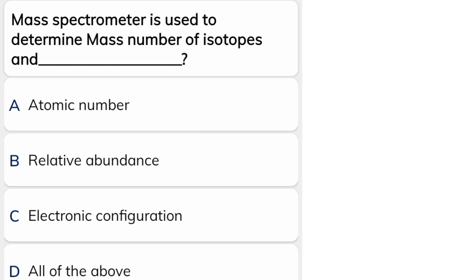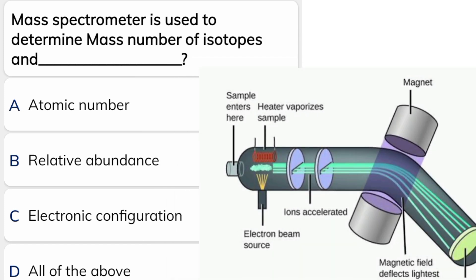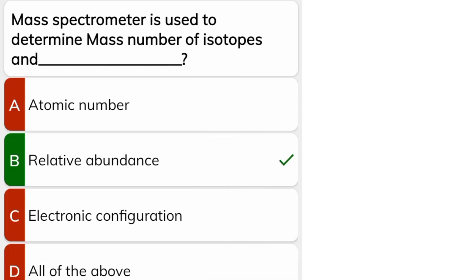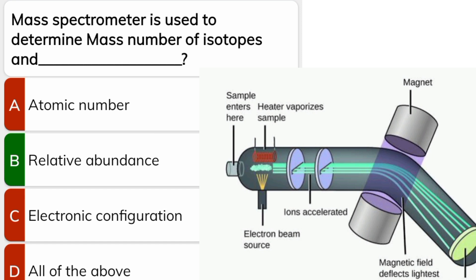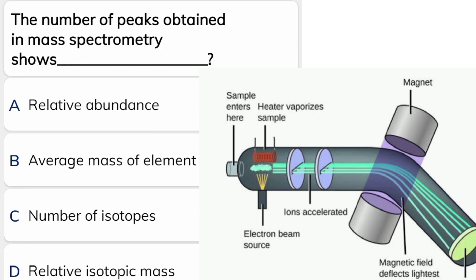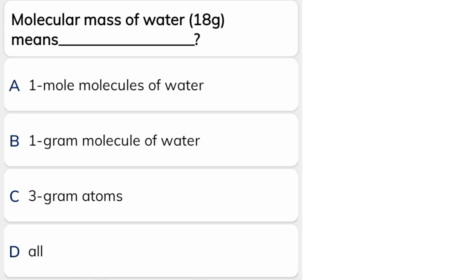Mass spectrometer is used to determine mass number of isotopes and relative abundance. The number of peaks obtained in mass spectrometer shows the number of isotopes.